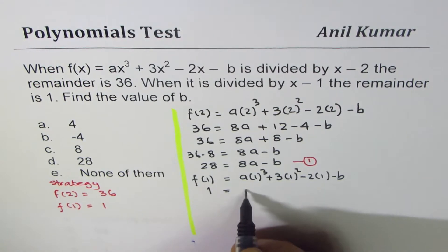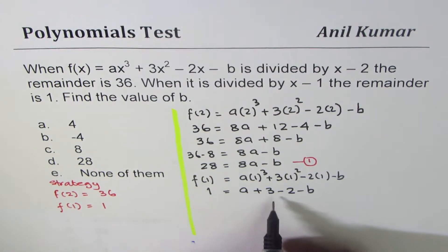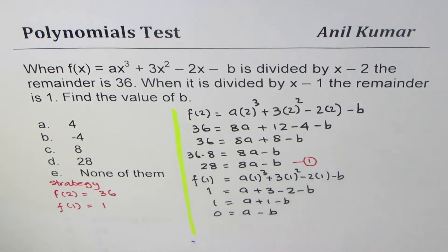That gives us 1 = a + 1 - b, which simplifies to 0 = a - b. This is equation 2.